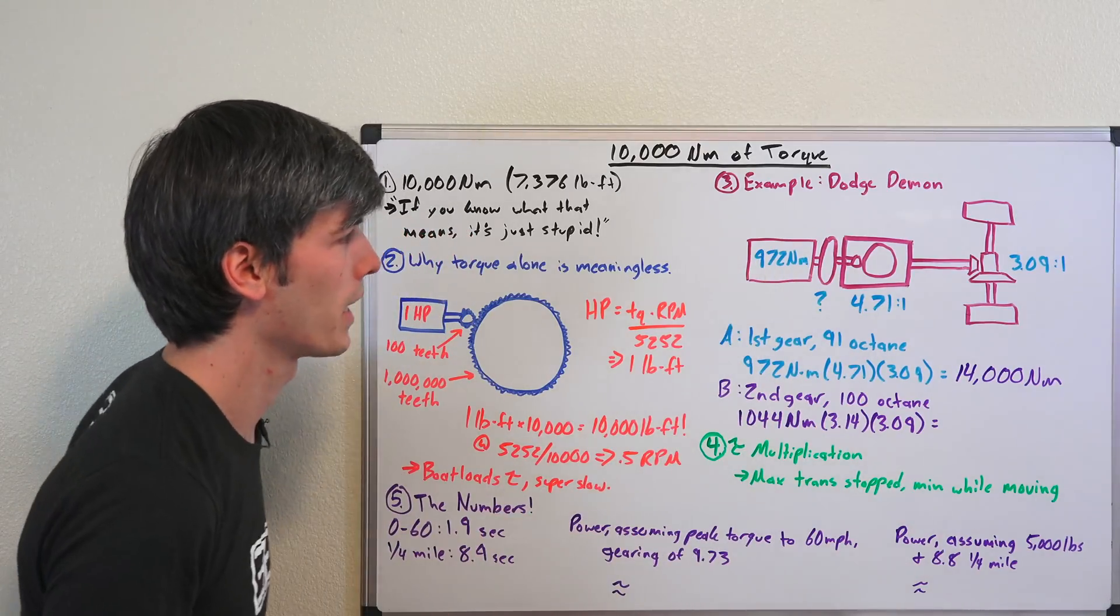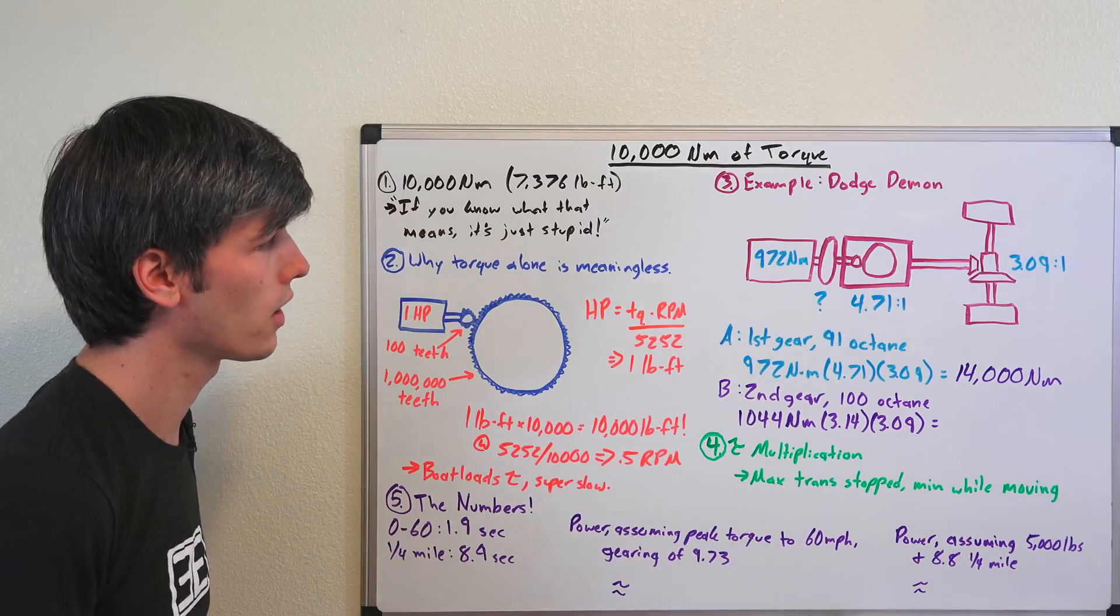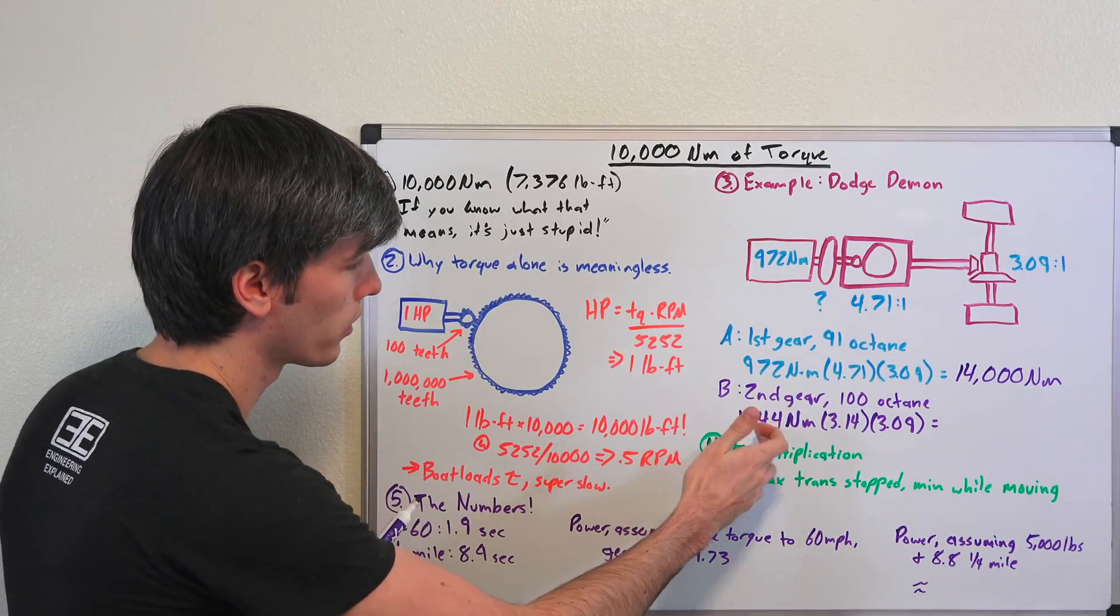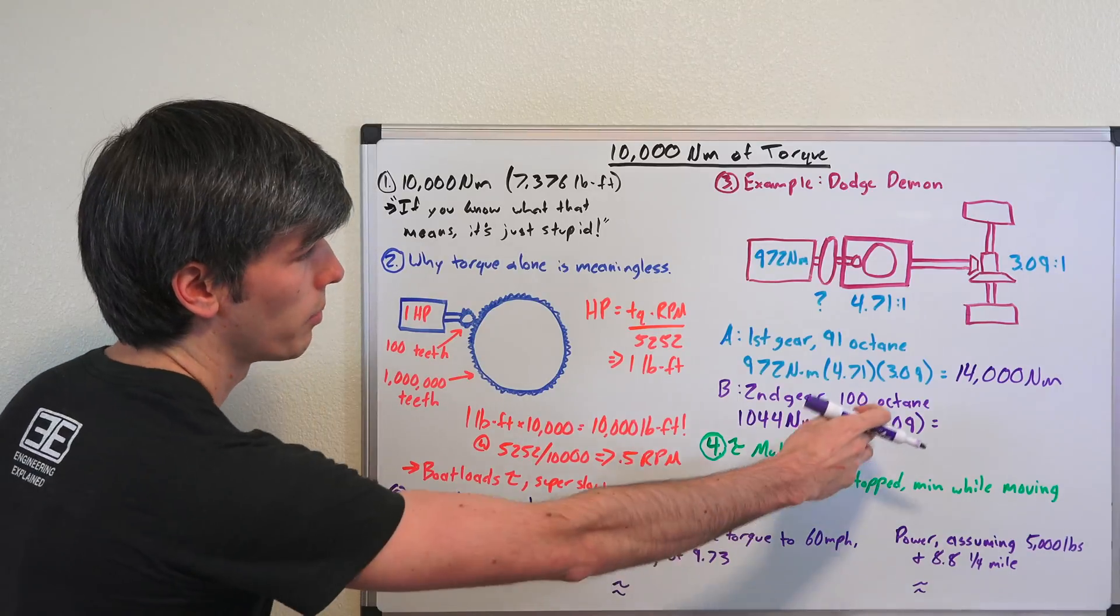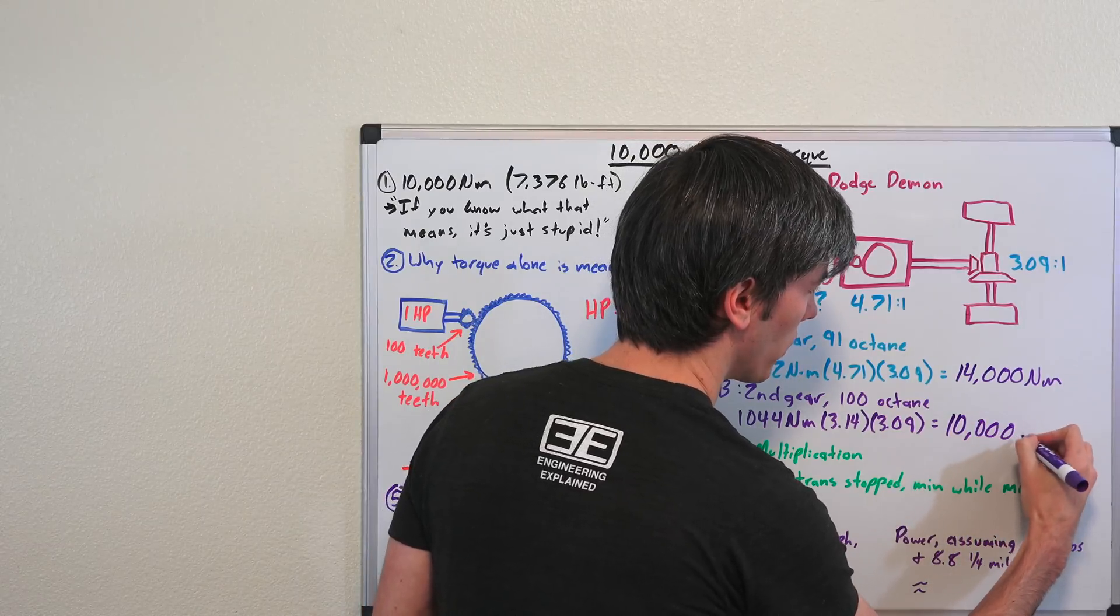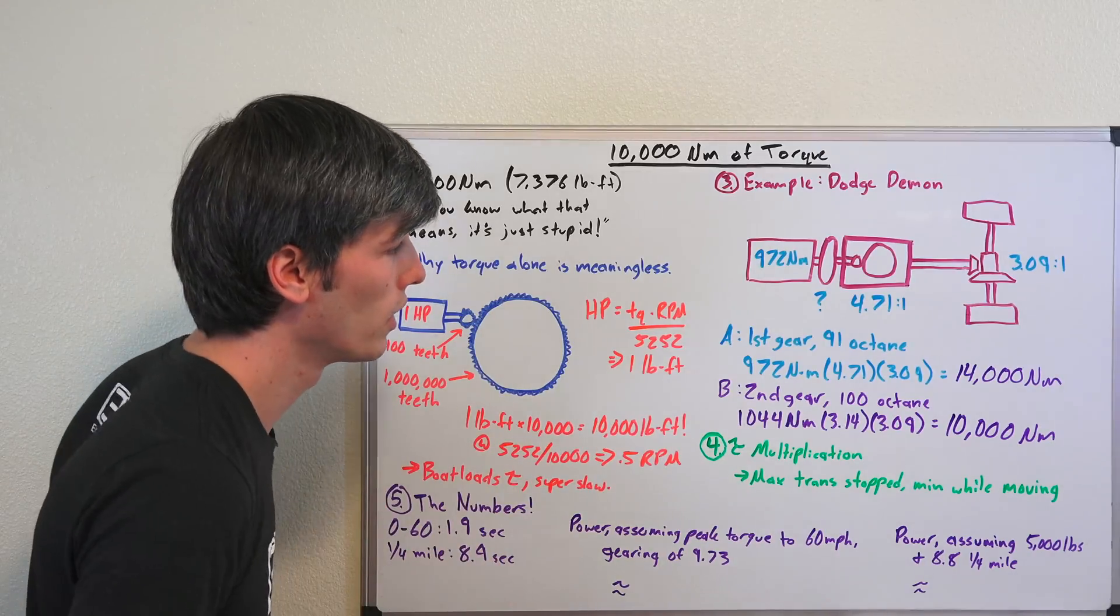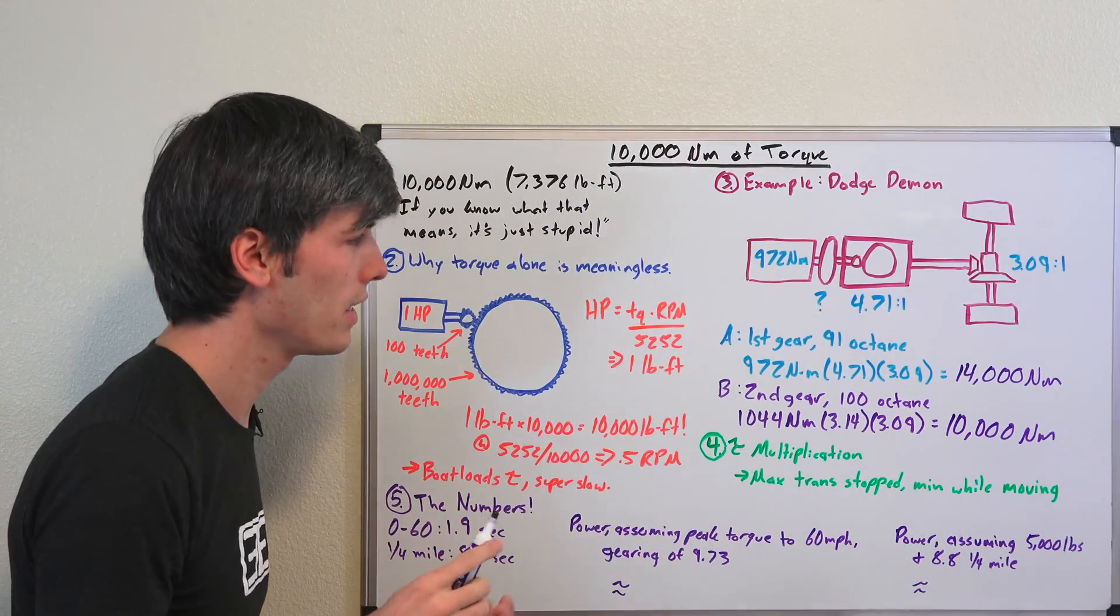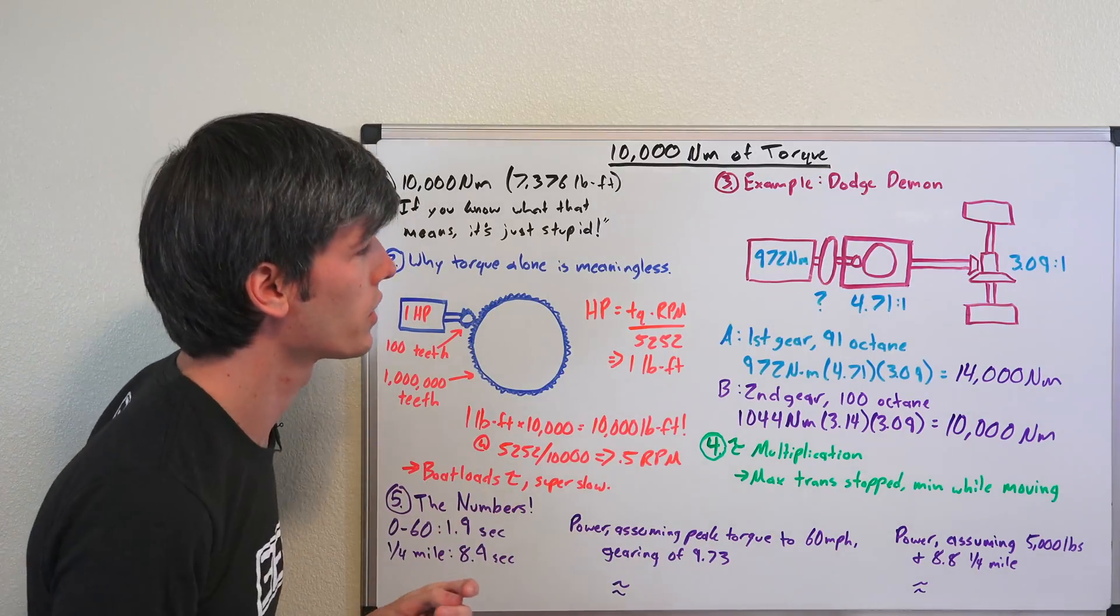Now a second example, if we were in second gear using a hundred octane fuel, the engine actually makes more torque with that hundred octane fuel: 1044 newton-meters. Second gear is 3.14 times 3.09 our final drive, and that gives us still over 10,000 newton-meters. So the Dodge Demon in second gear using high octane fuel can actually make more wheel torque than this Tesla claim here, and that's in second gear. So again, context is super important because gearing matters.